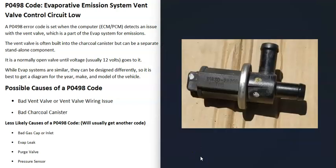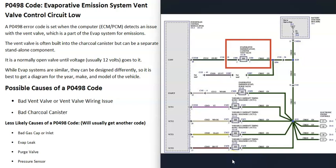These vent valves are just normally open solenoids, so if you have a multimeter you can test the windings for continuity and check for an open. You can also look up the rated ohms for that solenoid and see if it matches. Since it's a normally open valve, you can blow through it when there's no power, then apply power and confirm you can't blow through it. If you have a good OBD2 scan tool, it might have an option to send a signal to open and shut the valve.